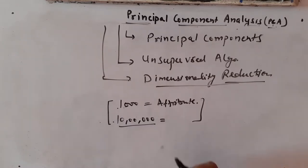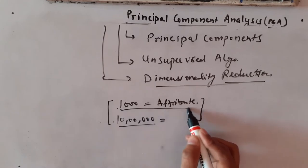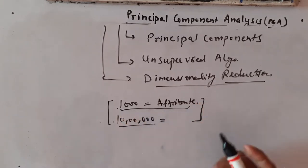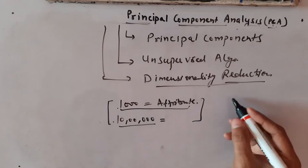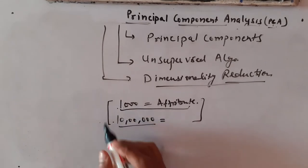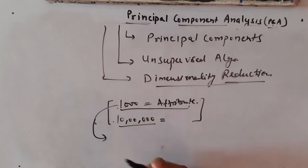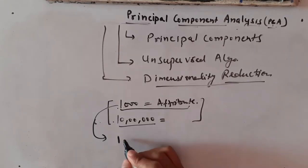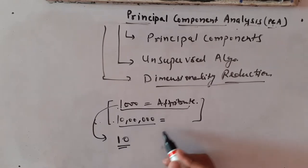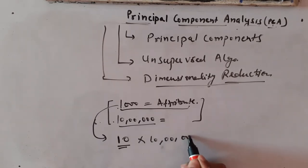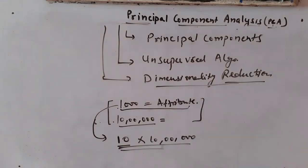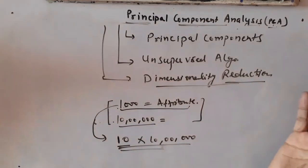Rather than dealing with all those attributes, what we can do is bring the number of attributes down to a lower value. Instead of 1000 attributes, assume we bring it down to 10. Then the computation becomes 10 into 10 lakh — our dataset size has decreased drastically.